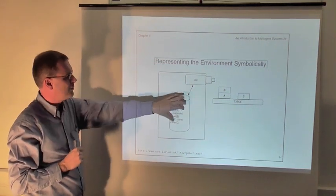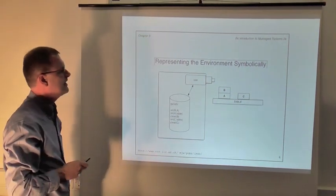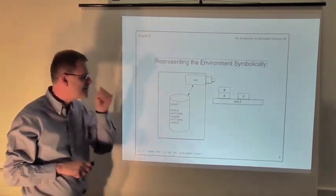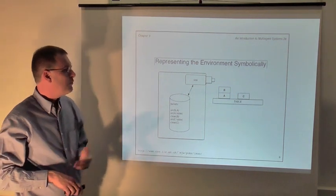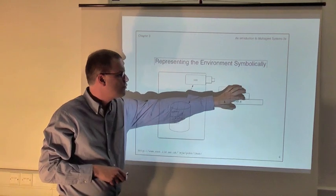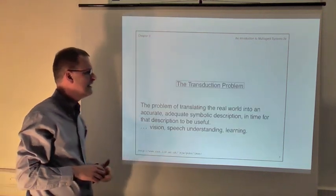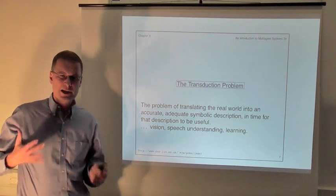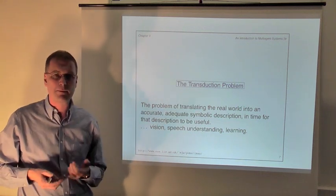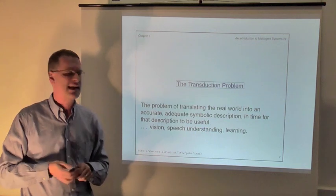Suppose we want to build this robot — what kinds of problems do we face? The first is how do you go from the real-world environment to this internal symbolic representation? That's called the transduction problem. Transduction just means to translate something from one form to another — here, how do you translate the real-world environment into the symbolic representation of it?